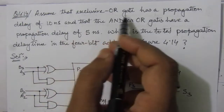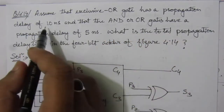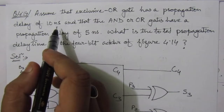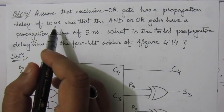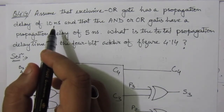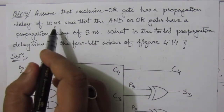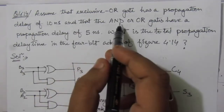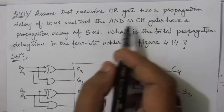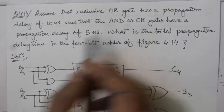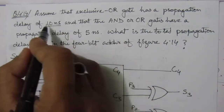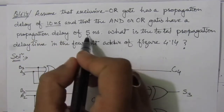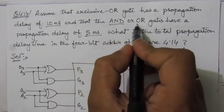The problem is: assume the exclusive OR gate has a propagation delay of 10 nanoseconds. That means whenever we have an exclusive OR gate, this gate will give the output after 10 nanoseconds of the time it received the input. Similarly, the AND and OR gates will have 5 nanoseconds of propagation delay. These are the given conditions: 10 nanoseconds for the exclusive OR gate, and 5 nanoseconds for the AND and OR gates.